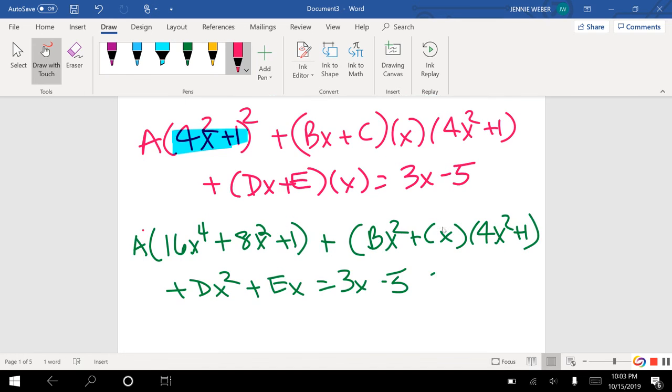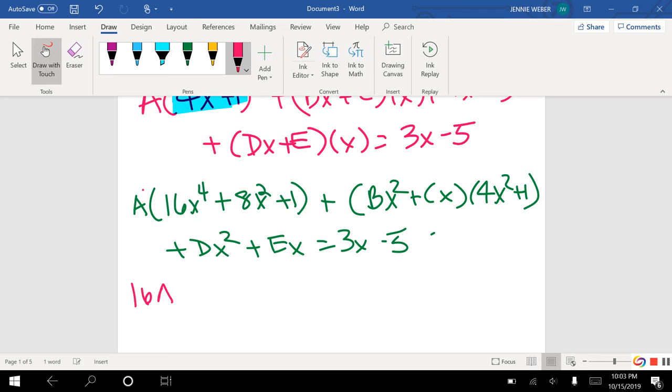And then plus Dx squared plus Ex equals 3x minus 5. So now here, I'm going to do this. I'm going to foil.